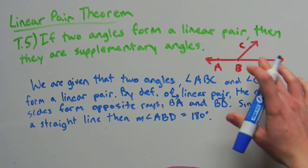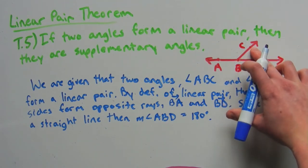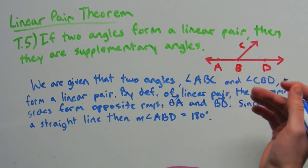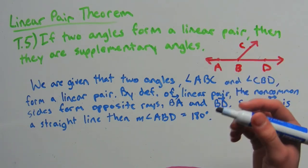Now notice that C is an interior point of the angle ABD. So this is where we're going to use the angle addition postulate.